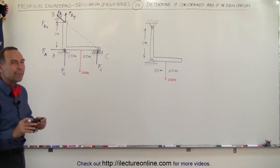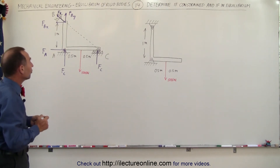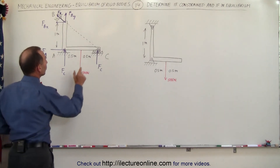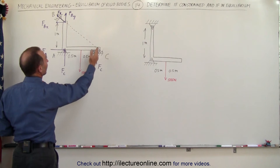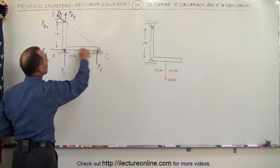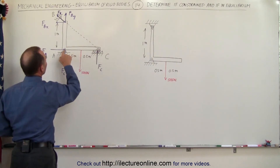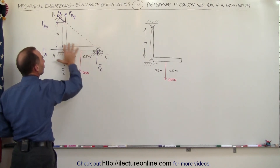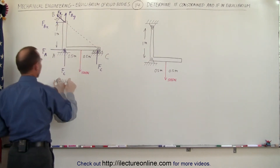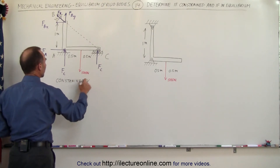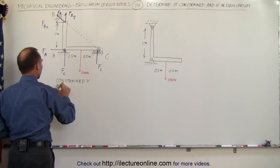Let's find the magnitude of the forces and first determine if it's completely constrained. There cannot be any motion in this direction or in this direction because it's held right here and right there, so this is completely constrained and fully in equilibrium.